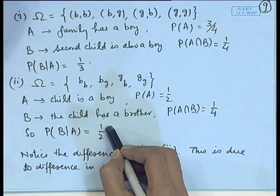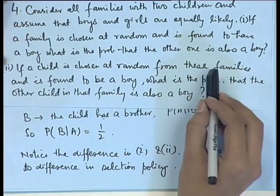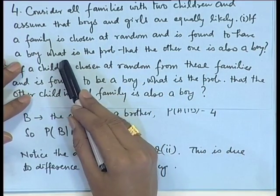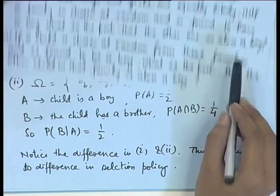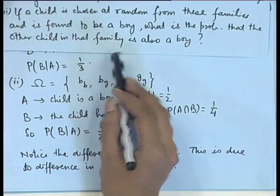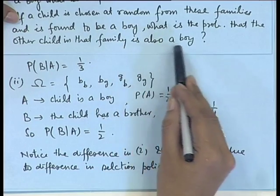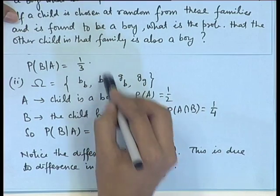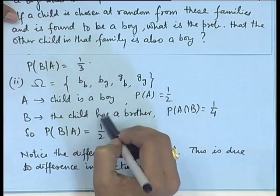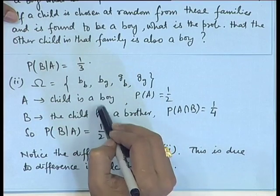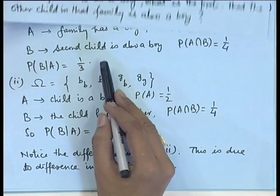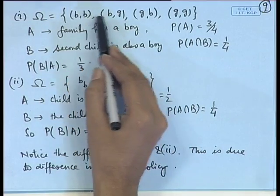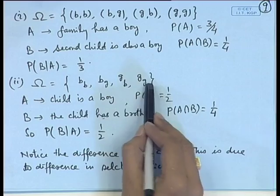Notice here, the answer may look to be the same in both parts: if a family is chosen at random and found to have a boy, what is the probability that the other one is also a boy? We get 1/3. Whereas in the second case, where the child is chosen, it is 1/2. It may look counterintuitive, but the answers differ because the sampling scheme is different, and therefore the representation of the sample space itself is different in both cases.